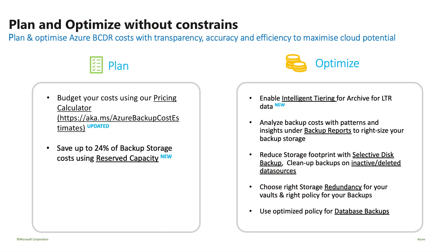Now that we're done with the demo, let's look at cost optimization. One can leverage pricing calculators that provide a granular item-level view to understand projected costs. We also provide support for reserved capacity — with pre-committed usage, you get up to 24% savings on backup costs. We also have intelligent tiering, where after a few months you can move backups to the archival tier for long-term retention. Backup reports provide great insights and help right-size your backup storage.